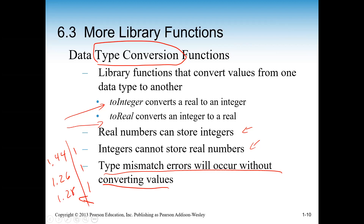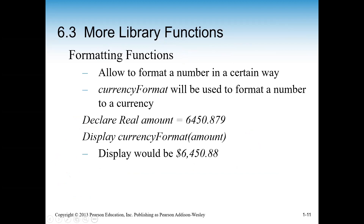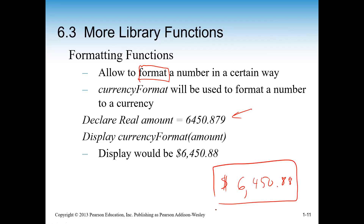In pseudocode you might write conversions as 'to integer' or 'to real'. Sometimes real numbers can store integers but integers cannot store real numbers — type mismatch errors will occur without converting values. Some programming languages: you may not want a real number to become an integer because you might lose that decimal, and that decimal might have some value, especially with small numbers like 1.26 or 1.28 where rounding would make them all one — and that's not necessarily what you want.